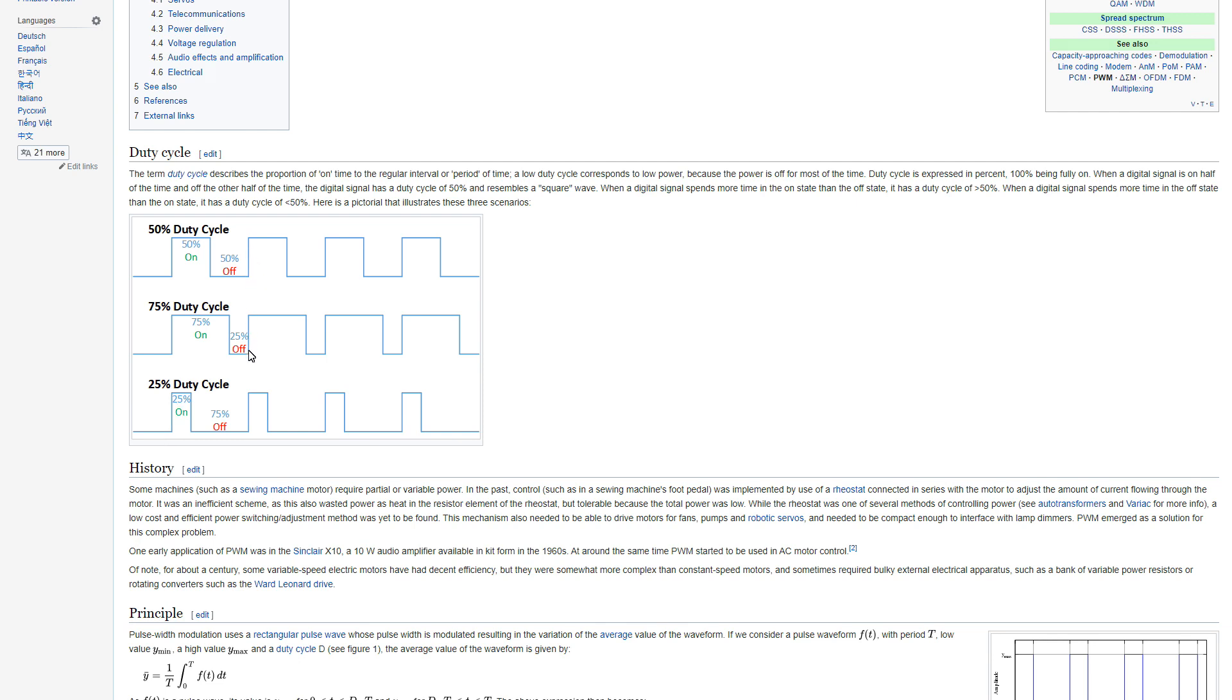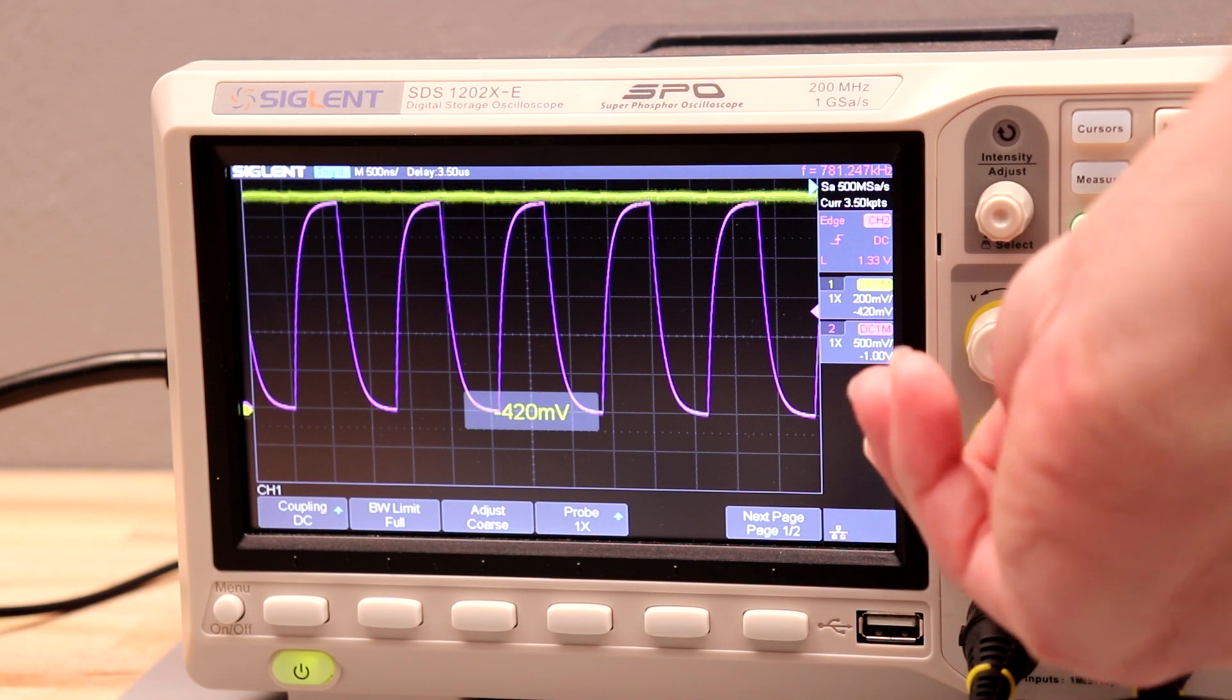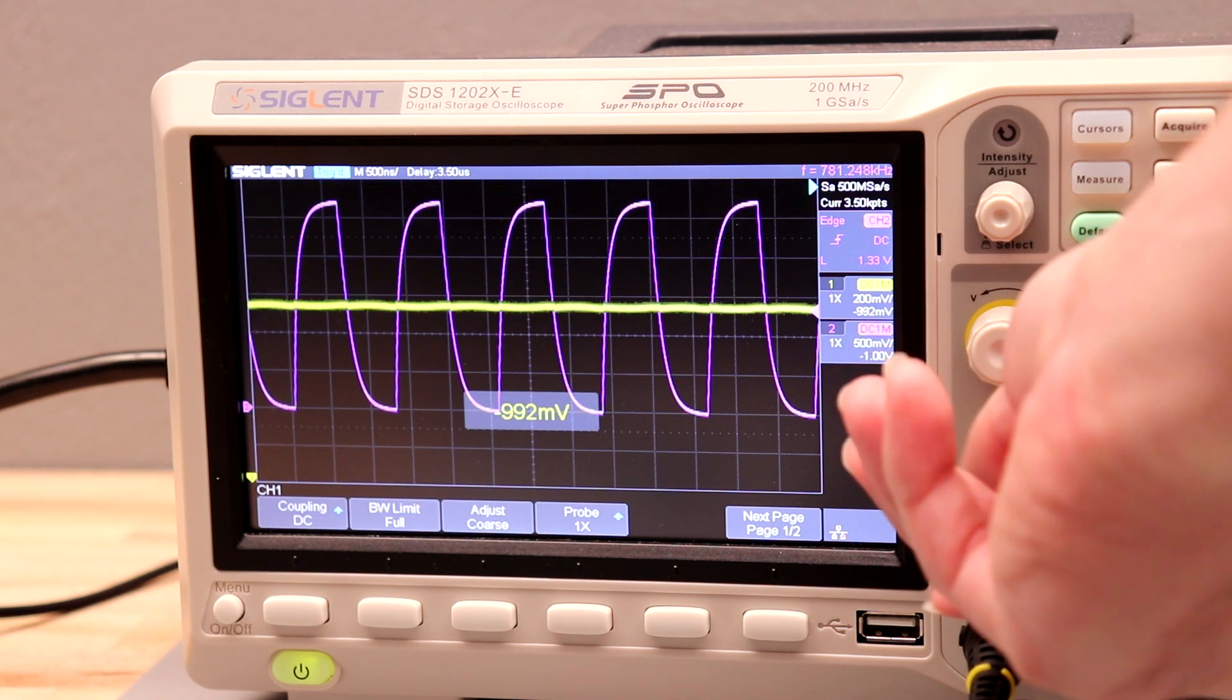To demonstrate how this is making audio, I'm going to show you the PWM pin signal and also the signal coming out of the headphone jack of the Raspberry Pi.